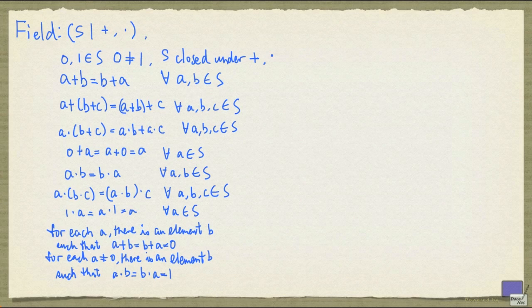Recall that a field is a structure with an underlying set S in two operations, plus and times, satisfying the following: S contains two distinct elements, which we'll call 0 and 1. The set S has to be closed under the two operations, and the elements of the set have to satisfy these properties.